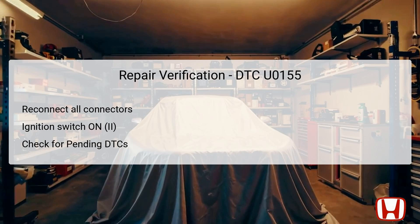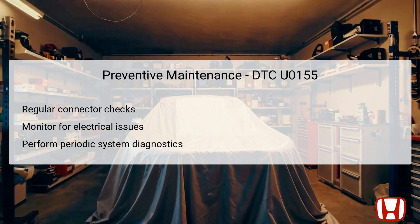If no errors are indicated, this marks the completion of the troubleshooting process. To prevent the recurrence of DTC U0155, integrate regular preventive maintenance into routine vehicle care. This includes performing regular checks of all electrical connectors, especially those related to the ECM and gauge control module, to ensure they are firmly connected and show no signs of corrosion or damage. Monitoring electrical systems for early signs of malfunction can allow for timely interventions, reducing the likelihood of communication failures. Conducting periodic system diagnostics with the HDS can help catch emerging issues before they escalate.